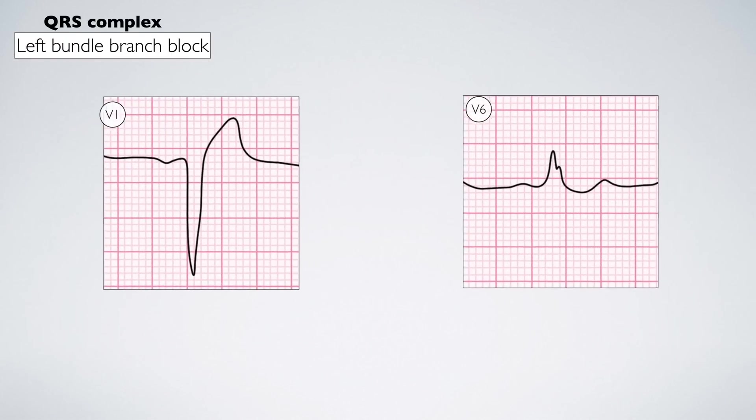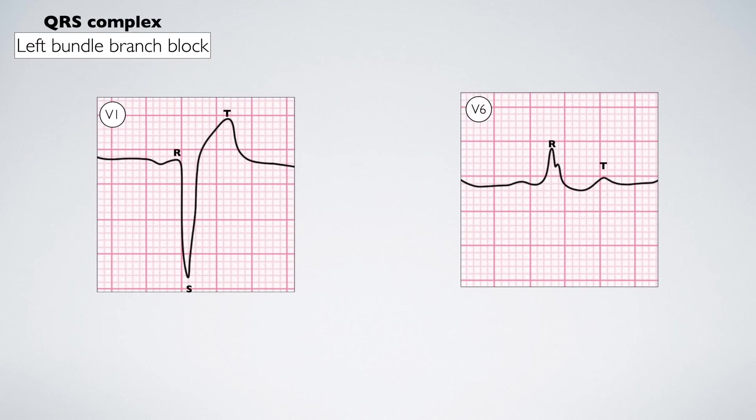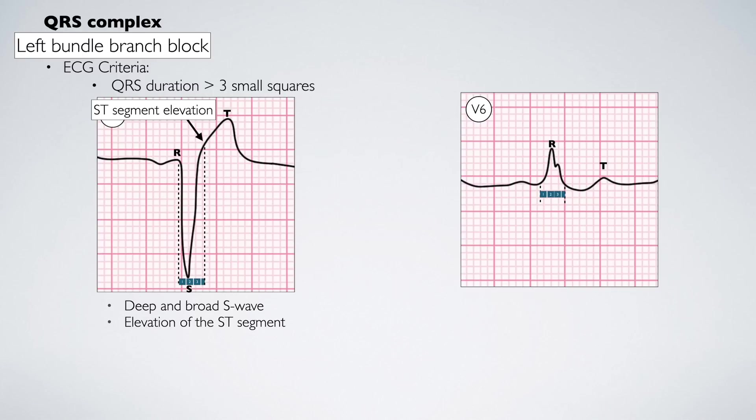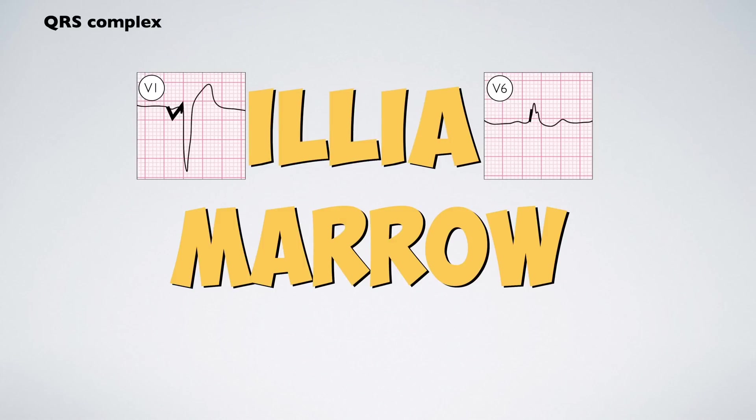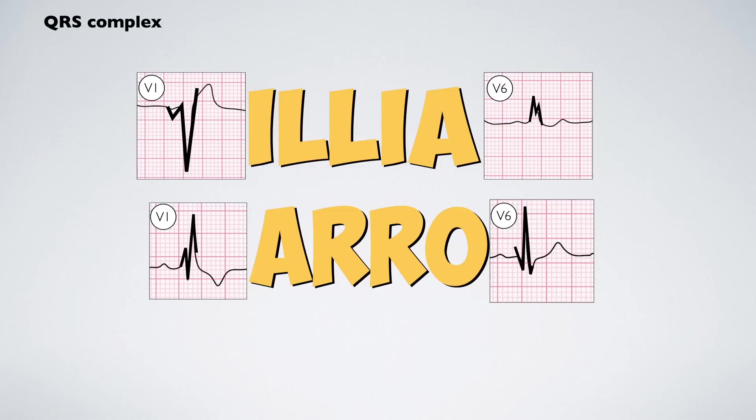In left bundle branch block, the QRS complexes are prolonged, equal to or greater than 3 small squares in duration. There must be a deep broad S-wave in V1 with elevation of the ST segment. In lead V6, there will be a completely broad positive R-wave that may be notched, and depression of the ST segment should be present. The mnemonic William Marrow can be used to remember the shapes of V1 and V6 in both left bundle branch block and right bundle branch block.